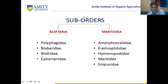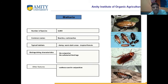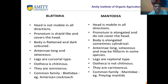So we have studied two suborders in the order Dictyoptera. Number one is Blatteria, in which we studied cockroach, and there are four families: Polyphagida, Blaberidae, Blattidae, and Epilampridae. And there are five families of mantis, including Mantidae. This is the difference between cockroach and mantis.